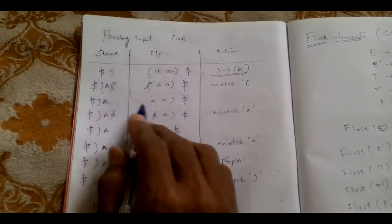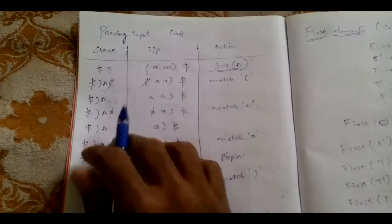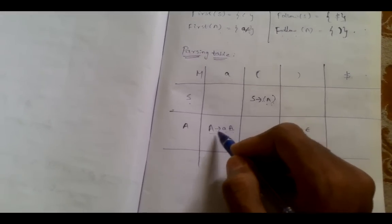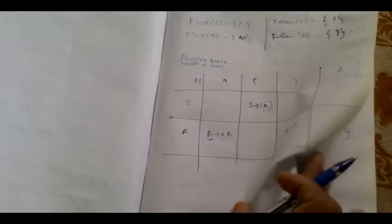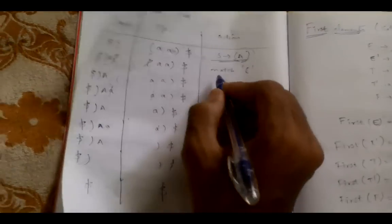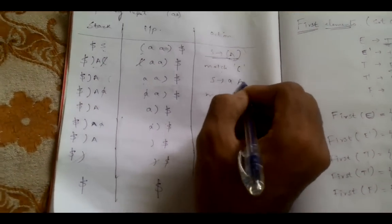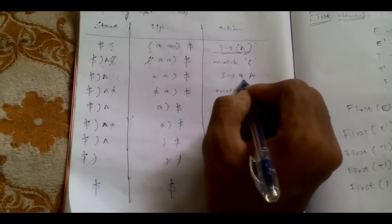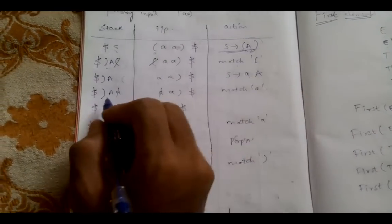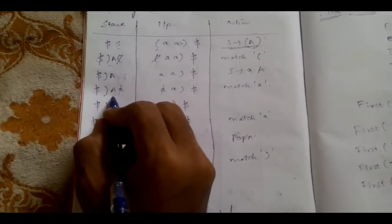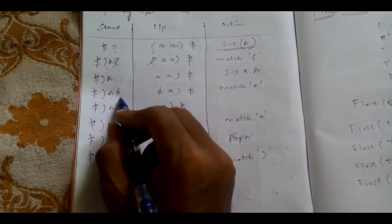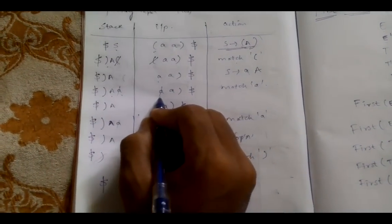Then again, capital A on small 'a' — we look in the parsing table. Capital A on small 'a' means we push these elements instead of A, in reverse order. A → small a capital A is pushed in reverse order so that small 'a' will be at the top of the stack. So capital A is pushed first, then small 'a'.